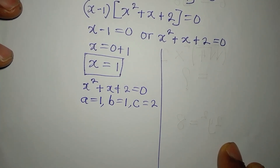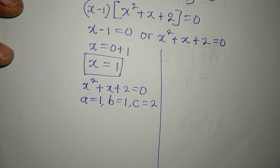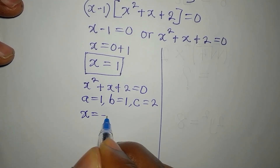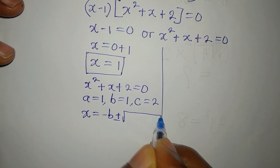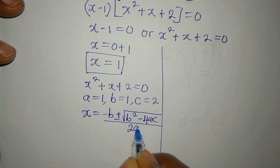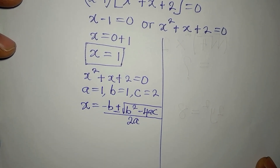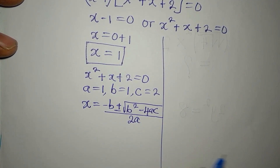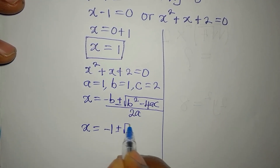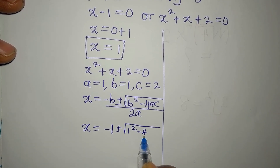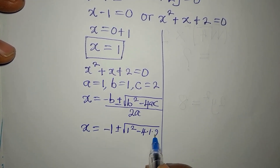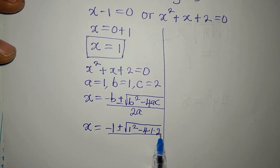The quadratic formula is x = (−b ± √(b² − 4ac)) / (2a). Substituting our values: x = (−1 ± √(1² − 4 × 1 × 2)) / (2 × 1), which simplifies to x = (−1 ± √(1 − 8)) / 2.